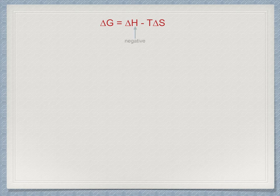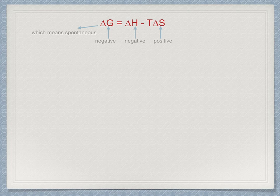If delta H is negative, that will contribute to a negative delta G. If delta S is positive, then the term minus T delta S will also contribute to delta G being negative. Therefore, if delta H is negative and delta S is positive, delta G will always be negative, and as such, a reaction will always be spontaneous.